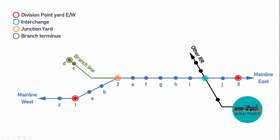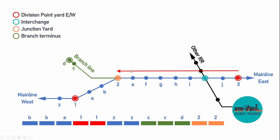Next we have the junction yard. This is where you have a branch splitting off from the main line. And then you can have a branch terminus yard at the end of the branch — a small yard to serve that branch and perhaps some large industries at that location.